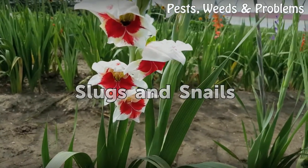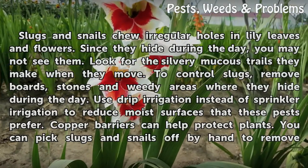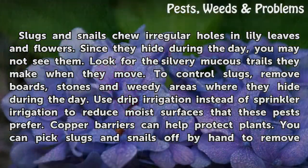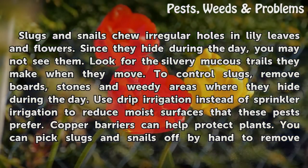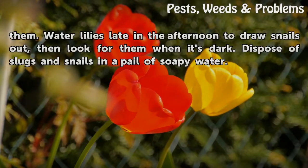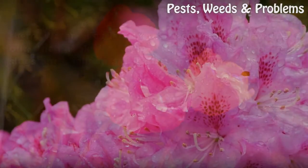Slugs and snails chew irregular holes in lily leaves and flowers. Since they hide during the day, you may not see them. Look for the silvery mucus trails they make when they move. To control slugs, remove boards, stones and weedy areas where they hide during the day. Use drip irrigation instead of sprinkler irrigation to reduce moist surfaces that these pests prefer. Copper barriers can help protect plants. You can pick slugs and snails off by hand to remove them. Water lilies late in the afternoon to draw snails out, then look for them when it's dark. Dispose of slugs and snails in a pail of soapy water.